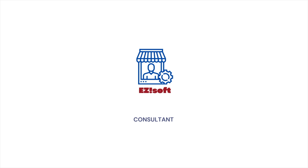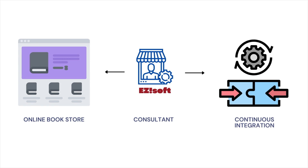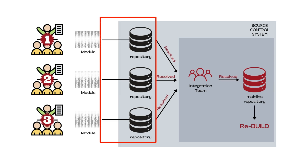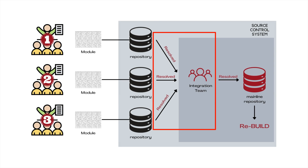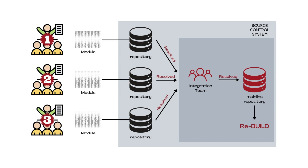In the last video, EasySoft — our fictitious software consultant company helping us write code for a fictitious online bookstore — implemented continuous integration in their software development process. Before continuous integration, the three EasySoft development teams were checking code into separate repositories on the source control system. At the end of each sprint, the integration team collected the code, merged it, and stored the merged code into a mainline repository on the same source control system.